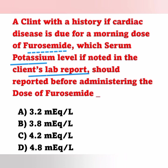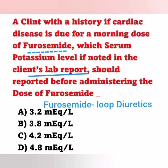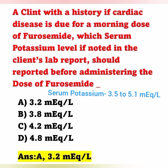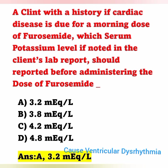The normal serum potassium level in an adult is 3.5 to 5.1 milliequivalents per liter. Administering furosemide with a low potassium level in a patient with a history of cardiac problems could cause ventricular dysrhythmia. Therefore, we should not administer furosemide when the serum potassium level is below normal.